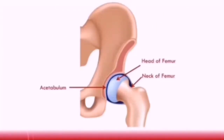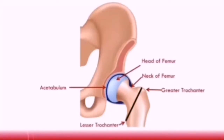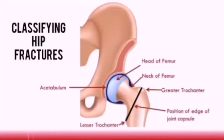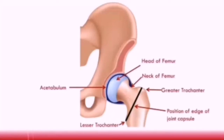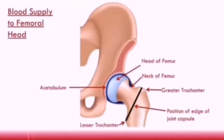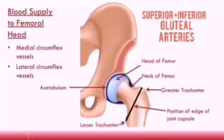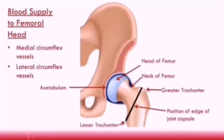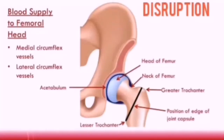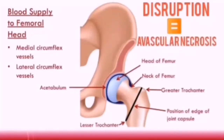Other important anatomical points include the greater trochanter and the lesser trochanter. The approximate position of the edge of the joint capsule of the hip joint is also very important for classifying hip fractures. The femoral head receives blood from the medial and lateral circumflex vessels, as well as the superior and inferior gluteal arteries. The femoral head therefore has a very rich blood supply, and disruption to this supply can lead to avascular necrosis, which is very dangerous.